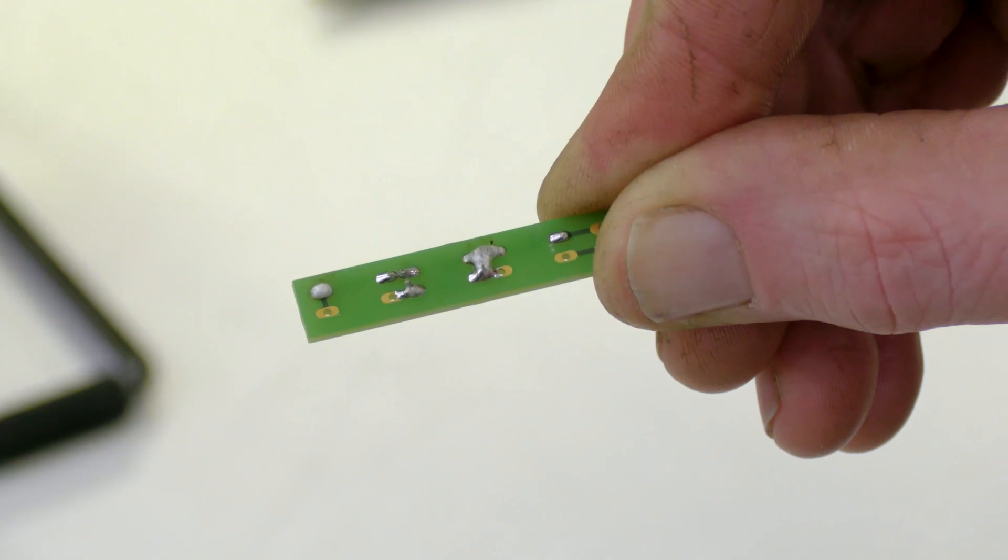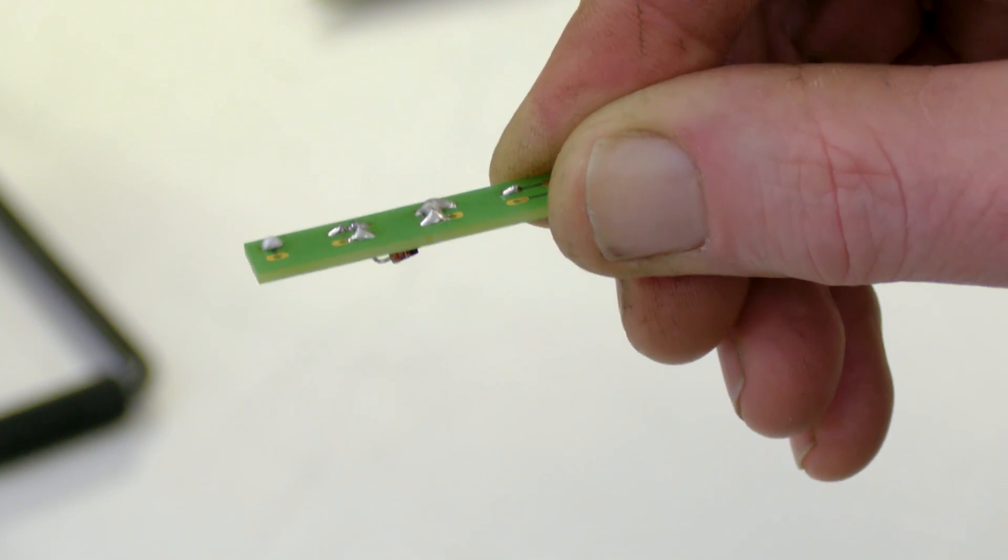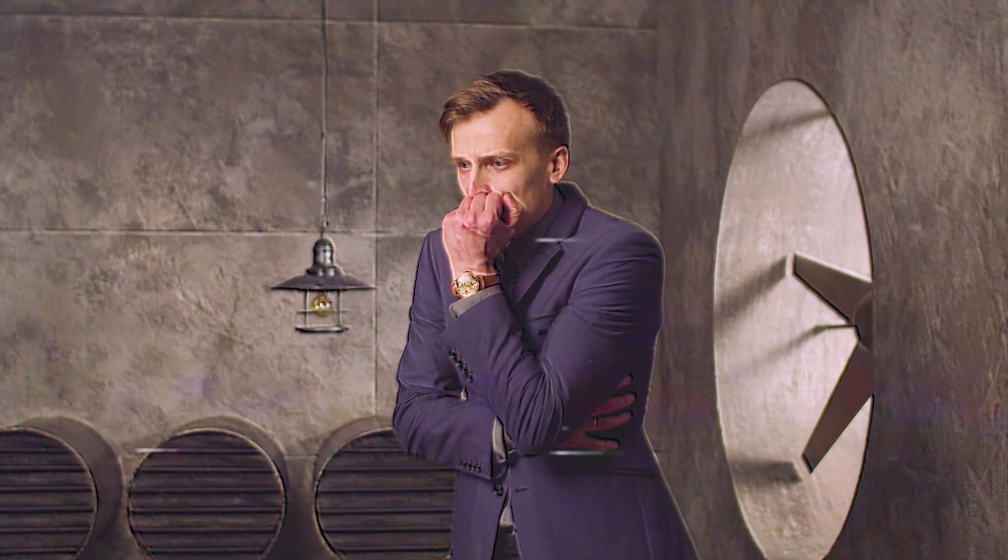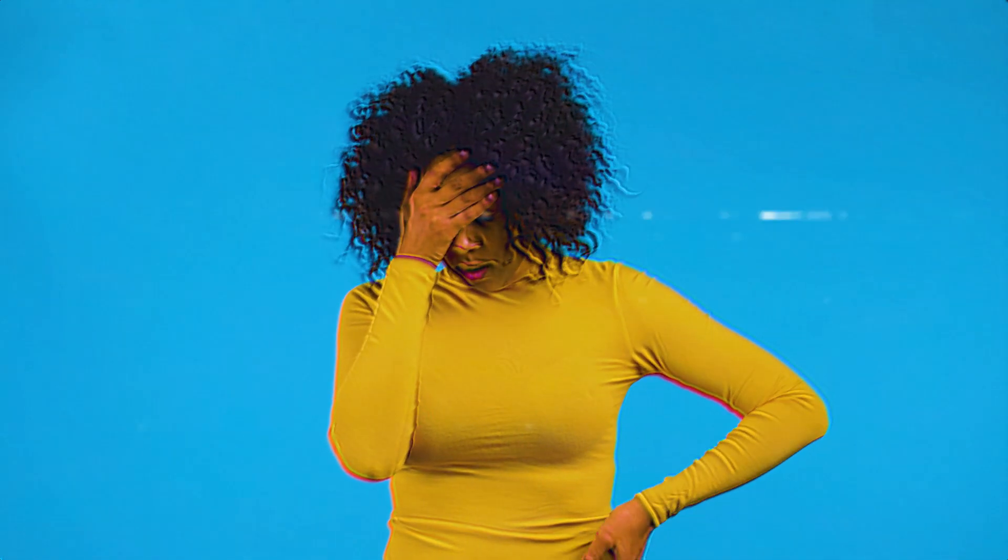Bad solder joints don't have a conical shape and they can cause connection problems in your circuits. If your joints did not turn out as planned then it is a good idea to remove the component and make the joint again.